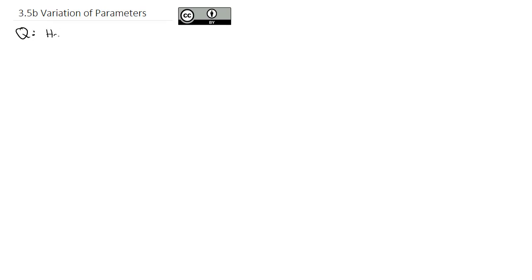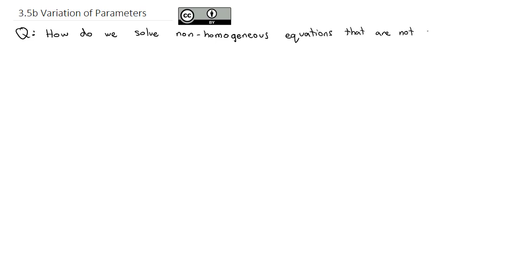So the question then becomes: how do we solve non-homogeneous equations that are not so nice? Well, the simple answer is we're going to use a method called variation of parameters.